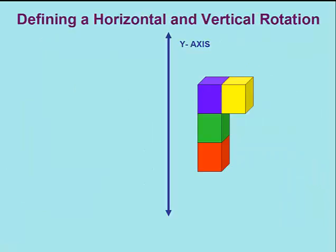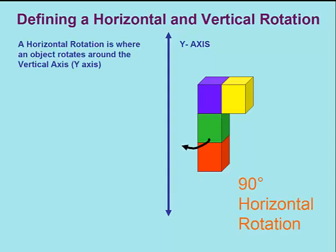First, we'll take an object and rotate it around the y-axis. Rotating an object around the y-axis is called a horizontal rotation.